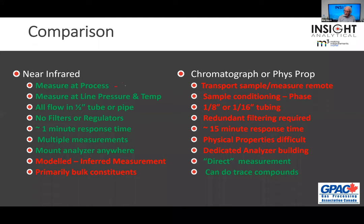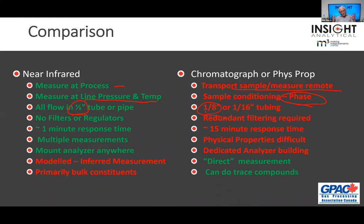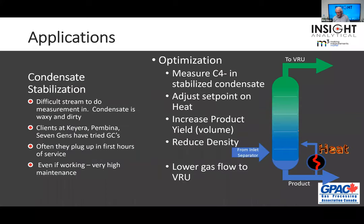Comparing infrared spectroscopy to a GC: with infrared, we measure right at the process; with a GC, we transport the sample to a remote location. That transportation creates pressure drops, and with liquids we get bubbles and phase change. With infrared, we keep everything at the same pressure and temperature as the process and assume single phase. Flow is through half-inch pipe versus eighth-inch tubing, with no filters or regulators — those are things that plug and require maintenance. We just flow through the cell and back out. We go through all these features, but really the key is simpler, lower-maintenance measurement right at the process.